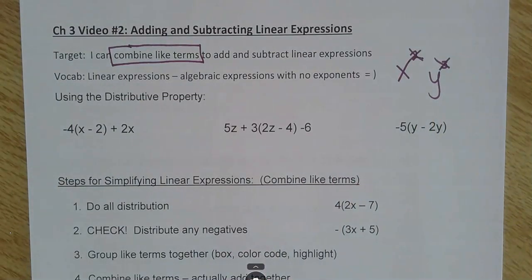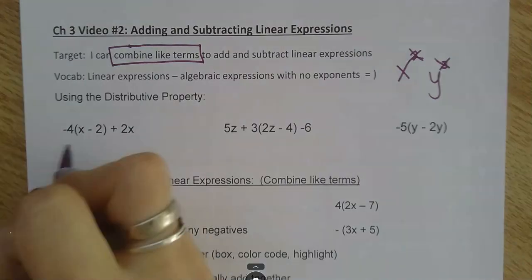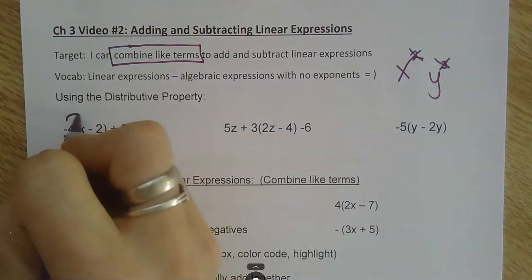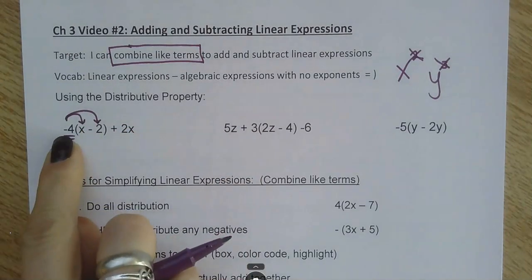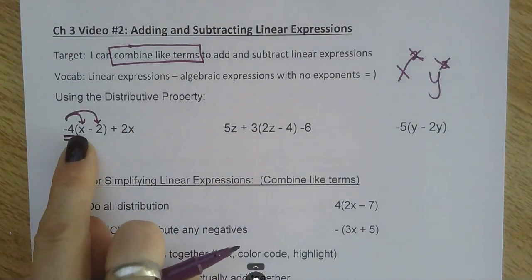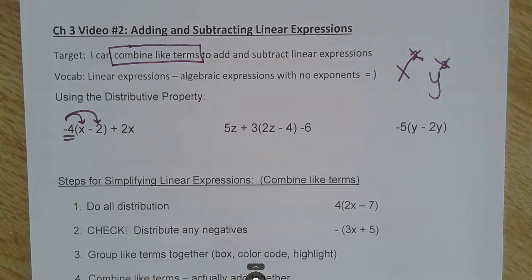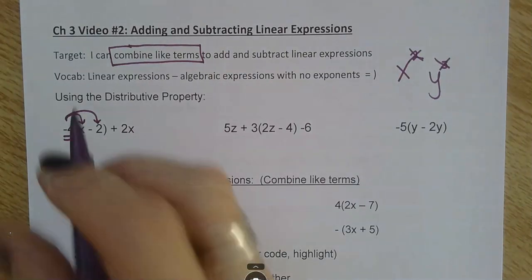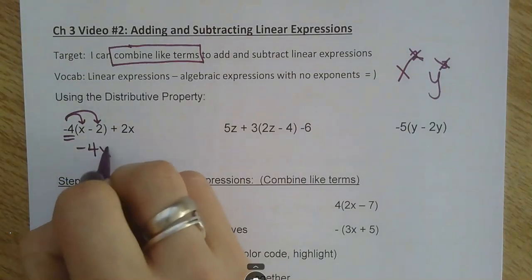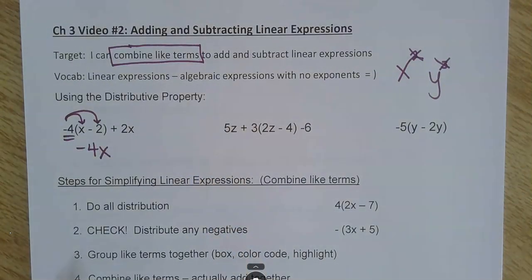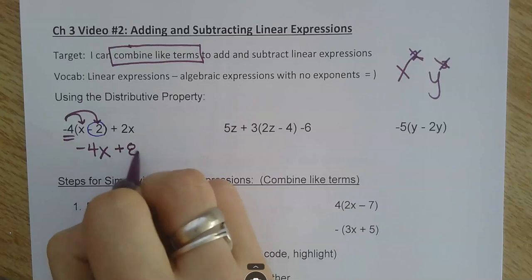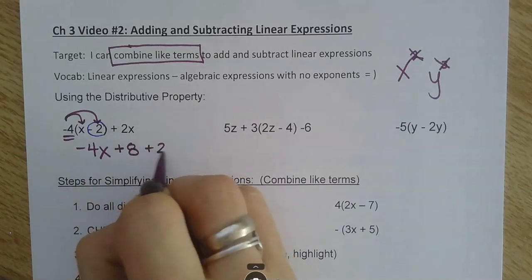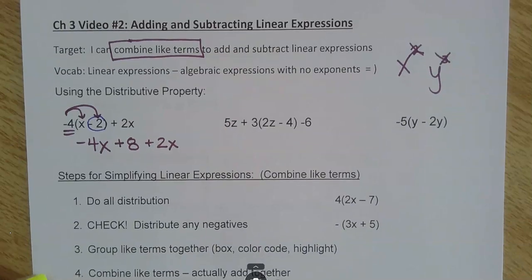Let's review distributive property quick. Anytime you see a number right in front of parentheses, you draw those arrows in — that tells you to multiply that number times everything in the parentheses. So this one would be negative four times x, and negative four times negative two. Remembering my rules from chapter one, that would be positive eight. Then bring everything else down, and combine like terms from there.